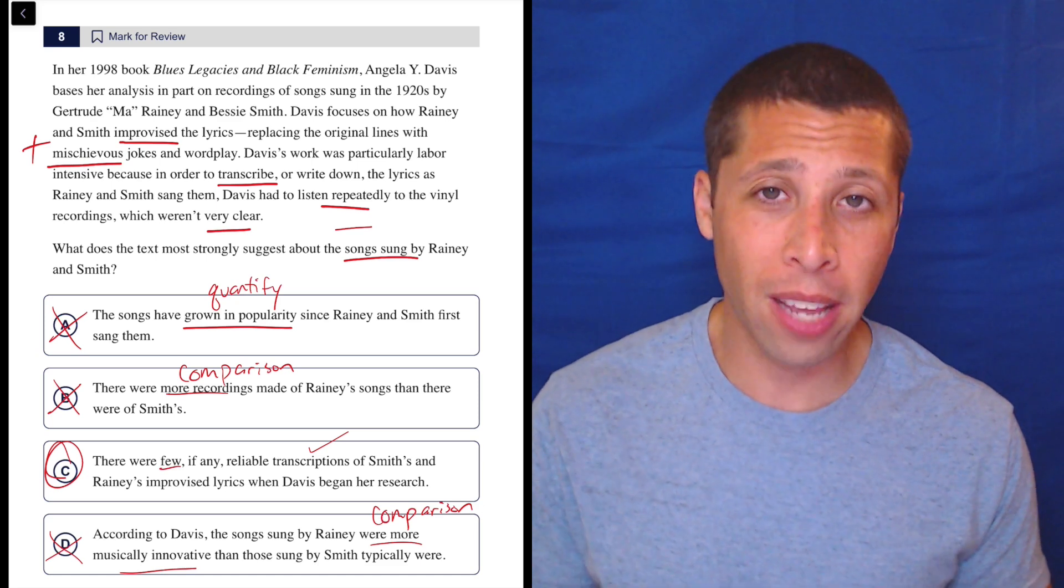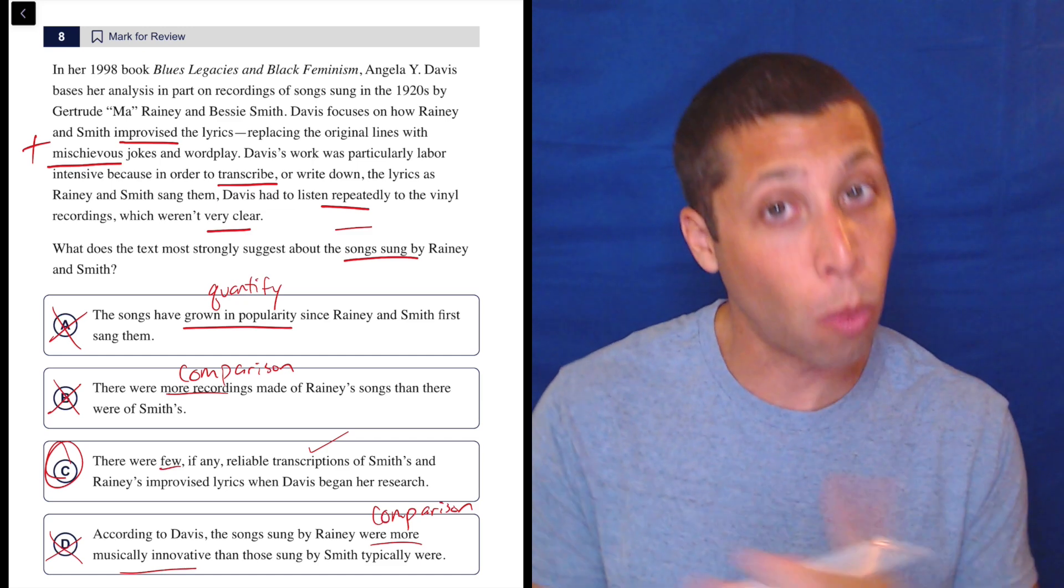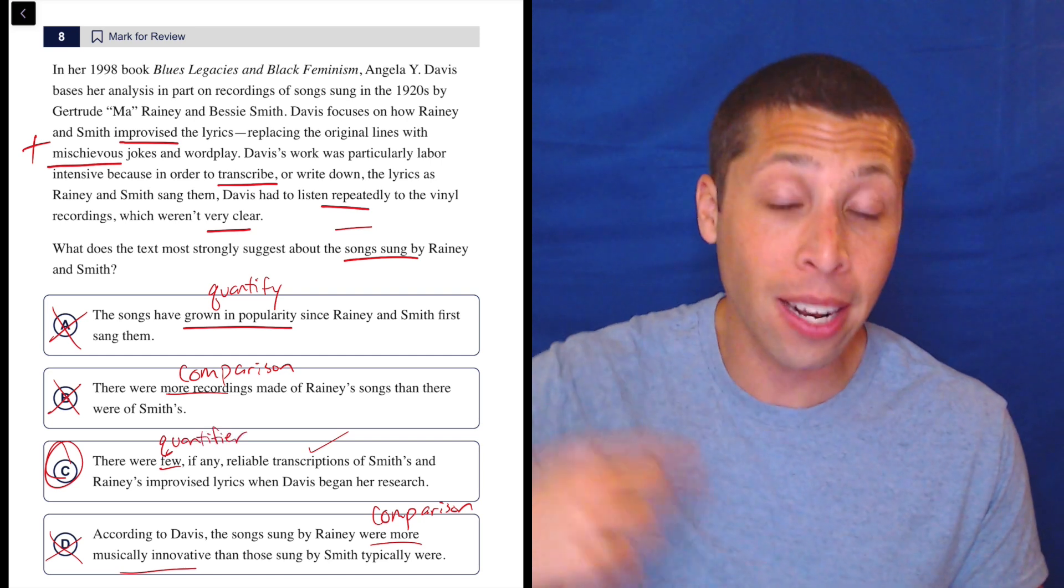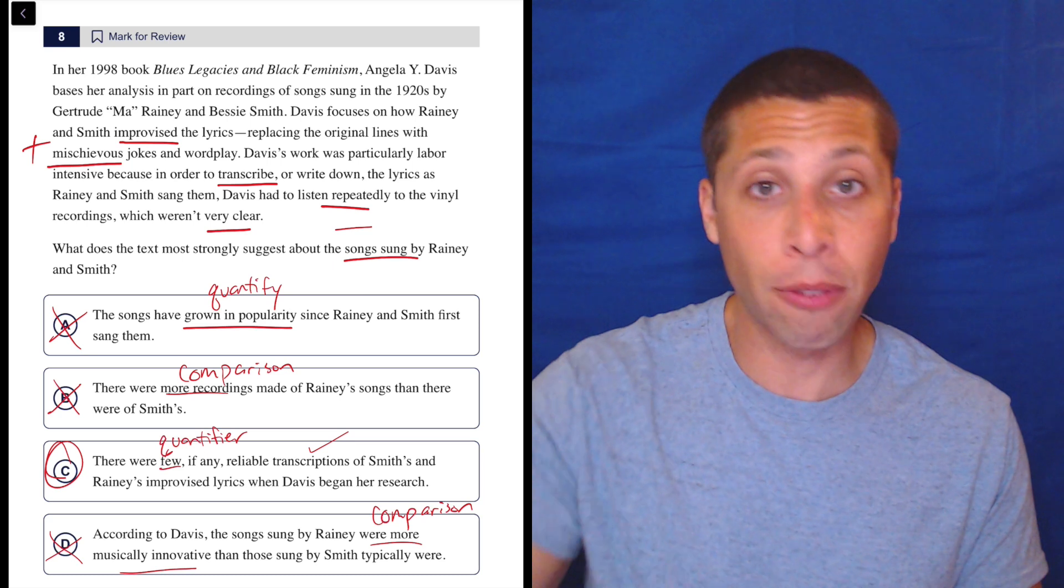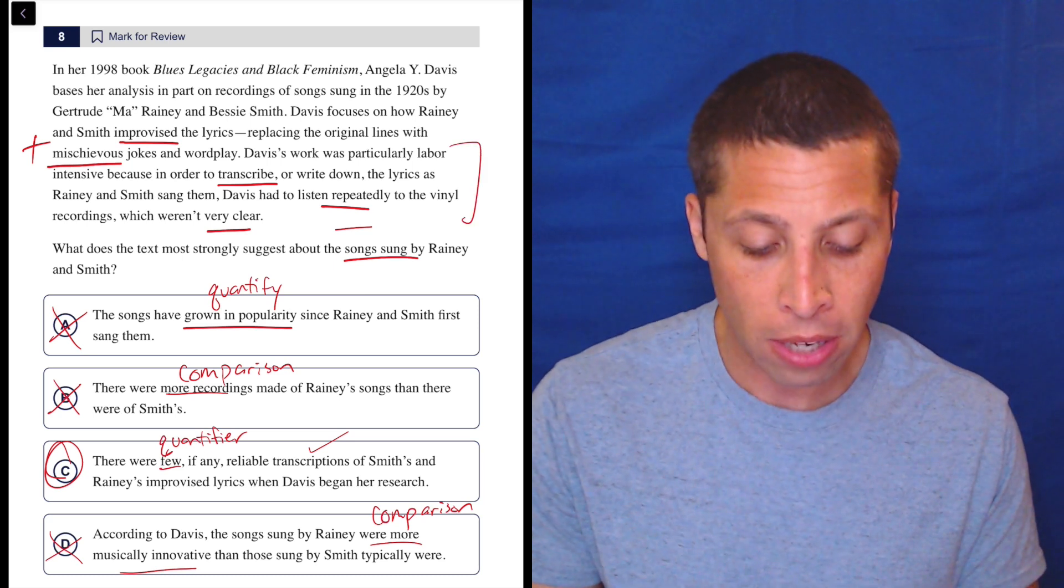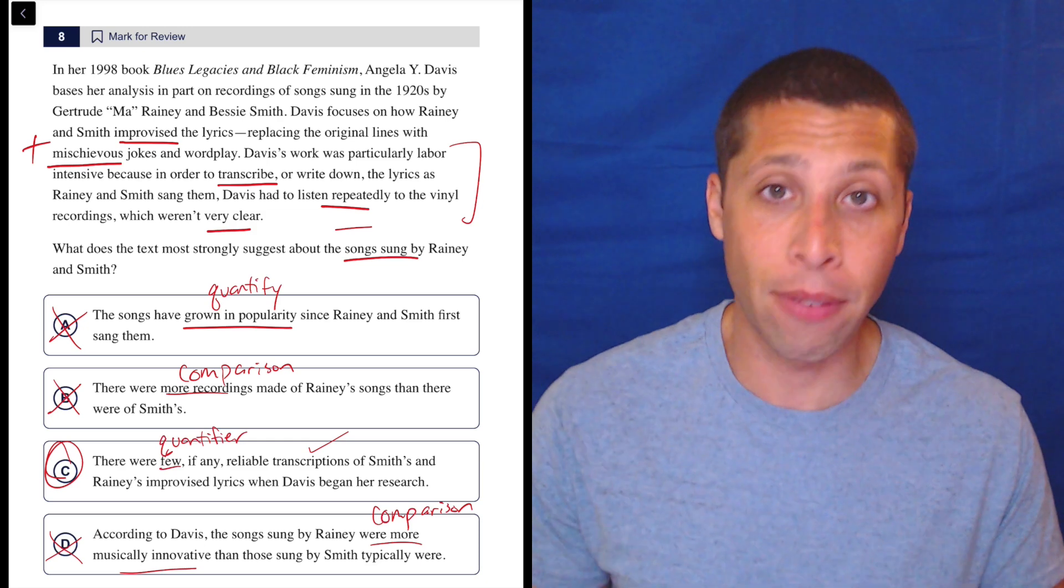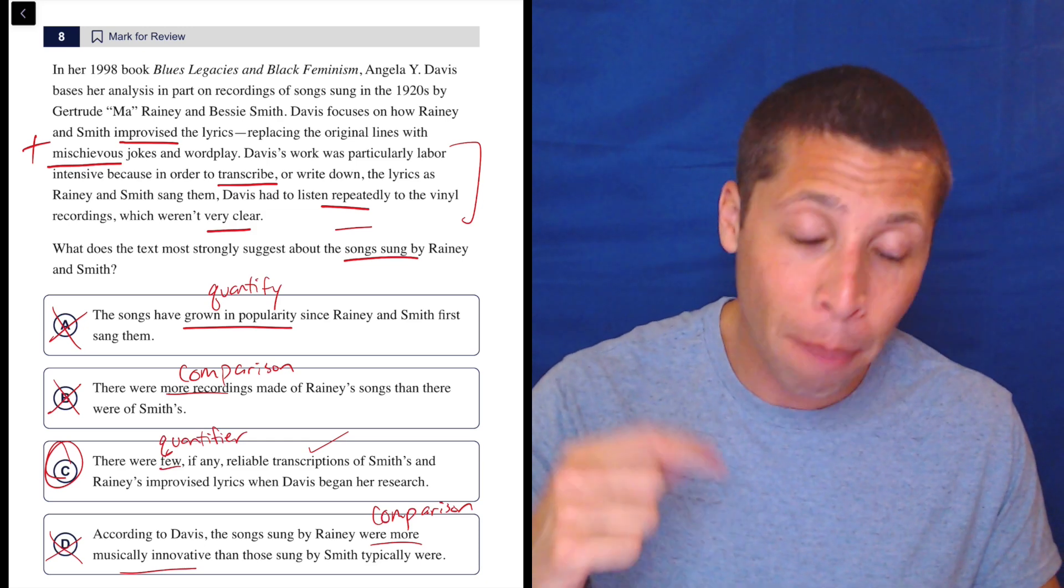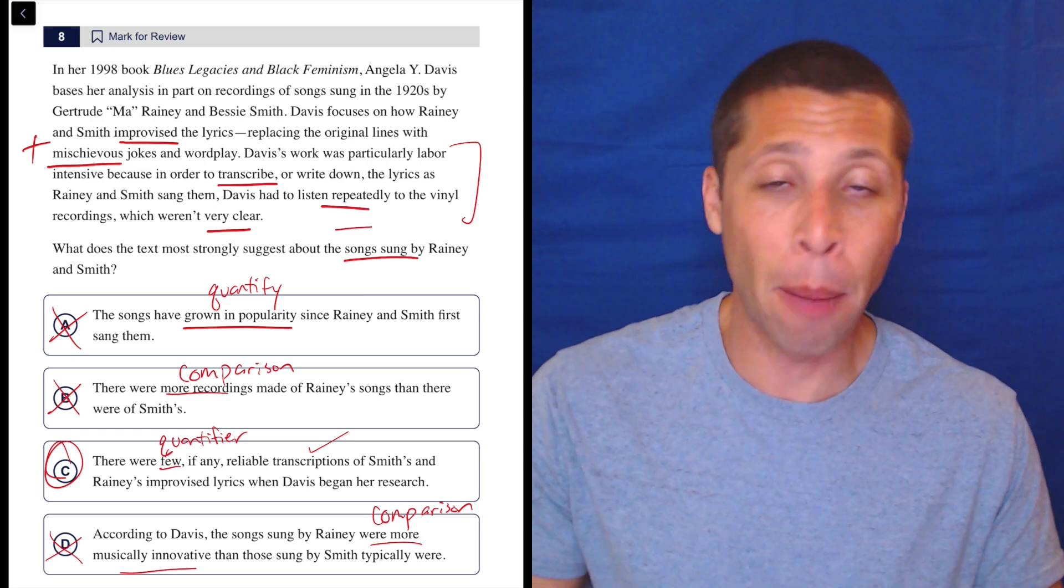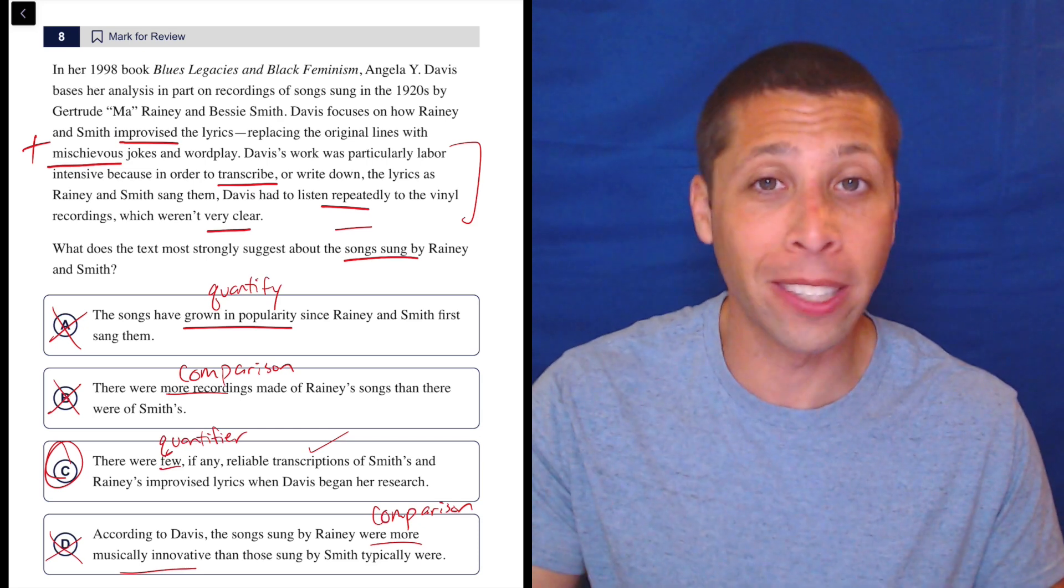So this is why it's helpful to understand the kinds of trap answers the SAT uses again and again. Comparisons are a big one. Quantifiers are a big one. Now, just because one of those words is in a choice does not mean that it's necessarily wrong because it just means that we have to go and prove that idea in the passage. And yes, I feel like I can prove that there are few transcriptions because Davis had to do the whole work of transcribing them herself. Why would she do that if there were lots of transcriptions? So I feel like I've got evidence of that. It still makes me nervous at first sight, but I'm not going to just instantly eliminate things. I'm going to go back to my memory, go back to the passage and prove it wrong. But there's always a reason I'm proving a choice wrong, not just seems wrong. That's just a feeling that's not reliable.